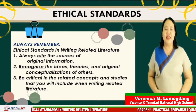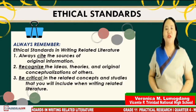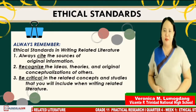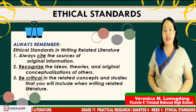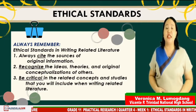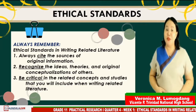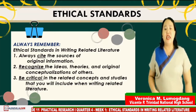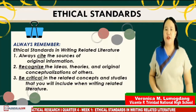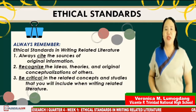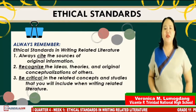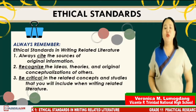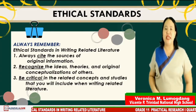To sum up our lesson for today, always remember that as researchers, we need to follow the ethical standards in writing related literature. Number one: always cite the sources of the original information. Number two: recognize the ideas, theories, and original conceptualization of others. And the last one: be critical in selecting the related concepts and studies that you will include when writing related literature.